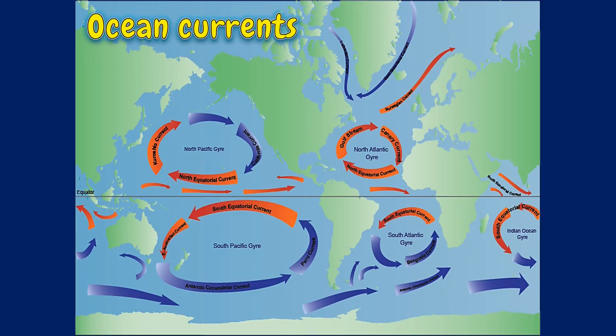Ocean currents are a continuous and directed movement of ocean water, driven by forces such as differences in salinity, waves breaking, temperature, wind, or the Coriolis effect. The direction of a current is determined by the depth of contours, other currents acting on the ocean, and the nature of the shoreline. As horizontal currents move south or northward, they carry cool or warm water over extended distances. The displaced water affects the air by warming or cooling it, thereby transferring the same effect to the land surface over which it blows. This is how ocean currents affect climate.